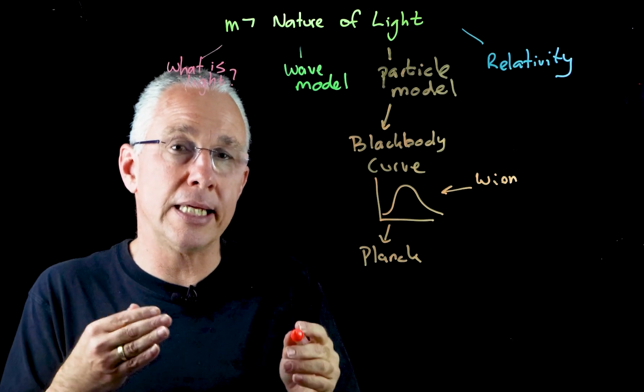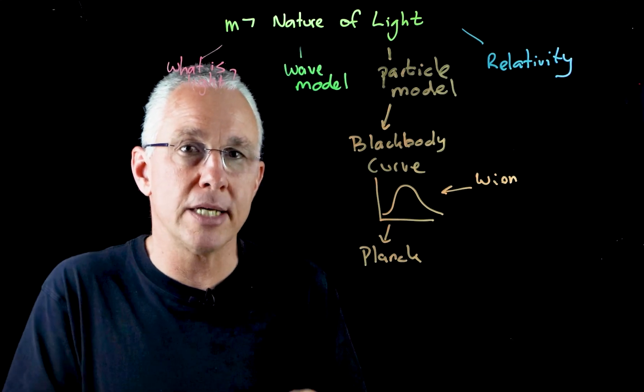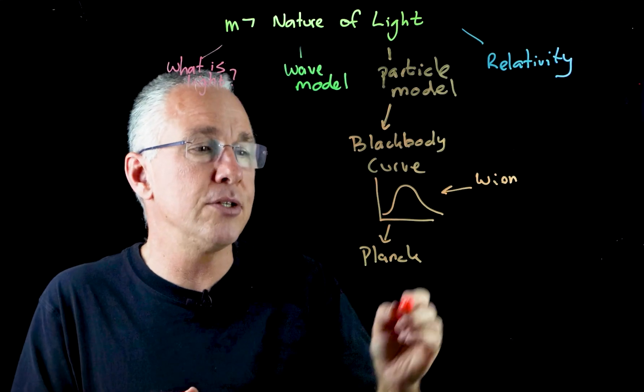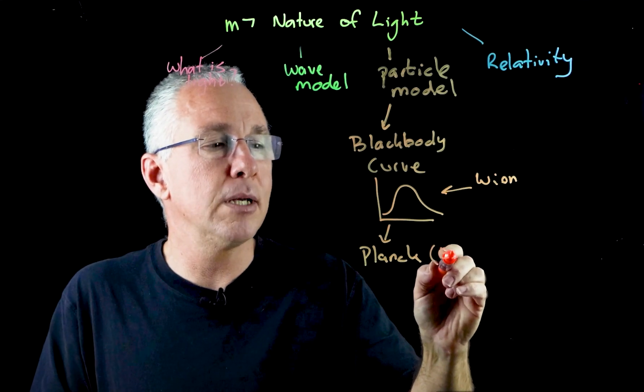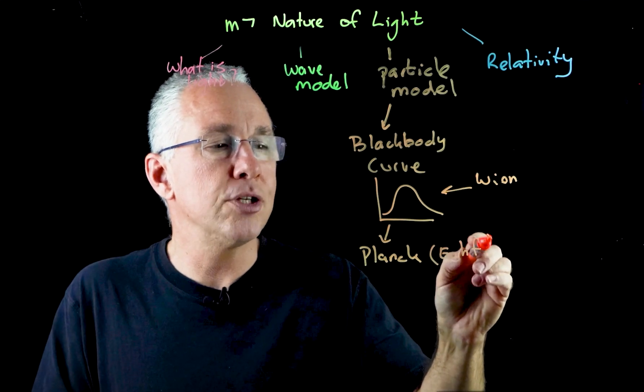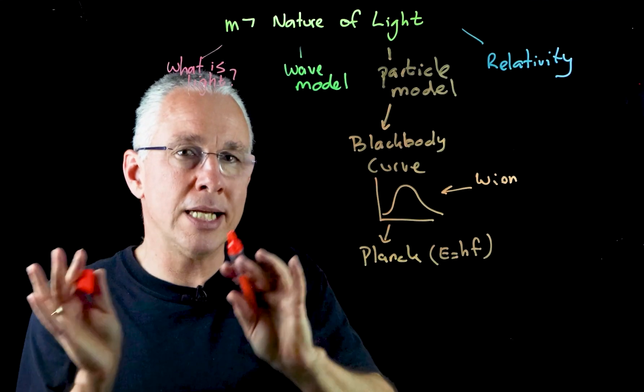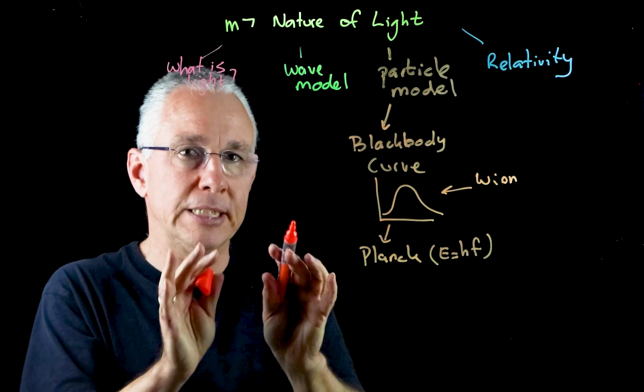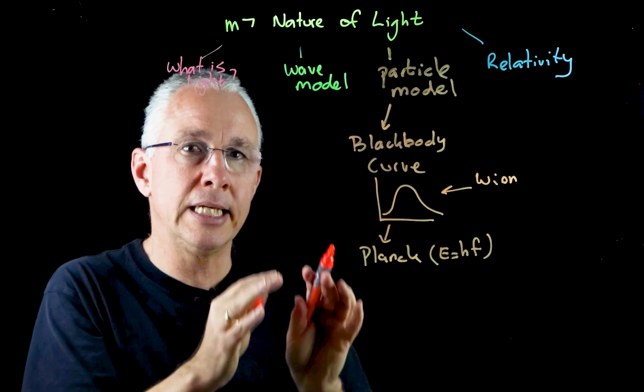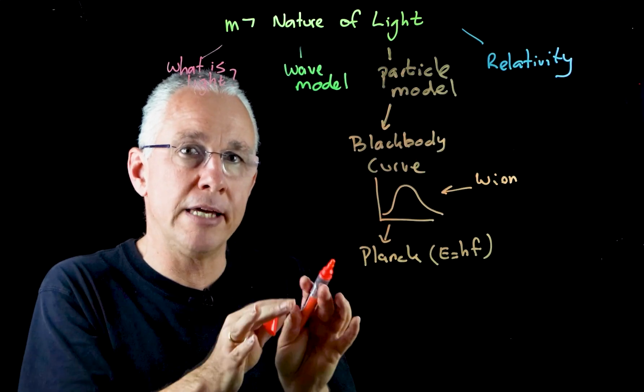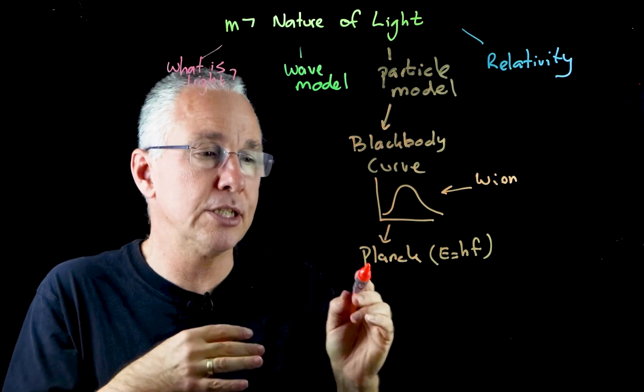That leads us to an understanding that energy can be quantized. In other words, energy can come in discrete values which leads us to the mathematical formula E equals hf. The syllabus here is saying light has wave-like properties, but what we're starting to see is that energy is not behaving continuously—it's behaving discretely.